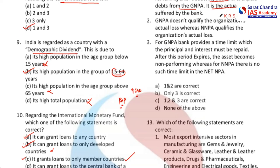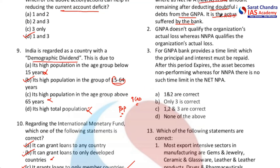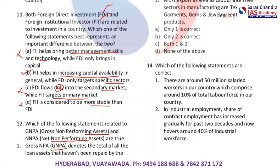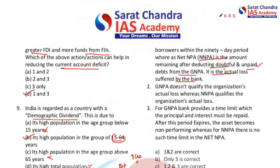NPA is defined as a loan where the principal or interest has not been repaid within 90 days. GNPA covers all such loan assets. For NNPA, after availing all options available, some people may start repaying to an extent even after 90 days. After removing doubtful and unpaid debts, what remains still has scope for repayment, and the remainder represents the actual loss suffered by the bank. So the first statement is correct.